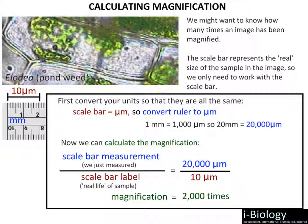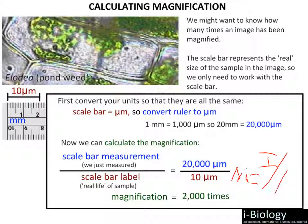The appropriate unit when dealing with magnification is X — so 2000X. Always remember: magnification equals image divided by actual. Image over actual gives you the ratio of magnification. On the next few slides, we'll go through some practice questions that would have appeared in your note packet.